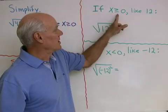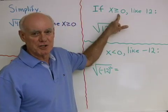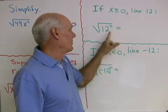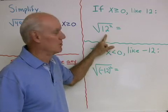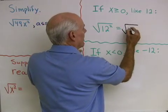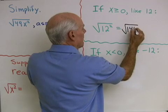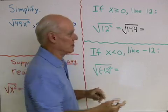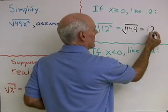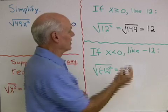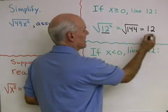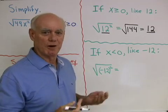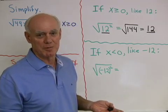Suppose that x is greater than or equal to 0 — that is, x is a positive number, for instance a number like 12. Let's see what happens when we take the square root of 12 squared. That's going to be the square root of 144. And then when I take the positive square root of 144, I just get 12. What's nice about this is that the number I started with, 12, is exactly the same as the number I ended up with. So the square root of 12 squared just turns out to be 12.